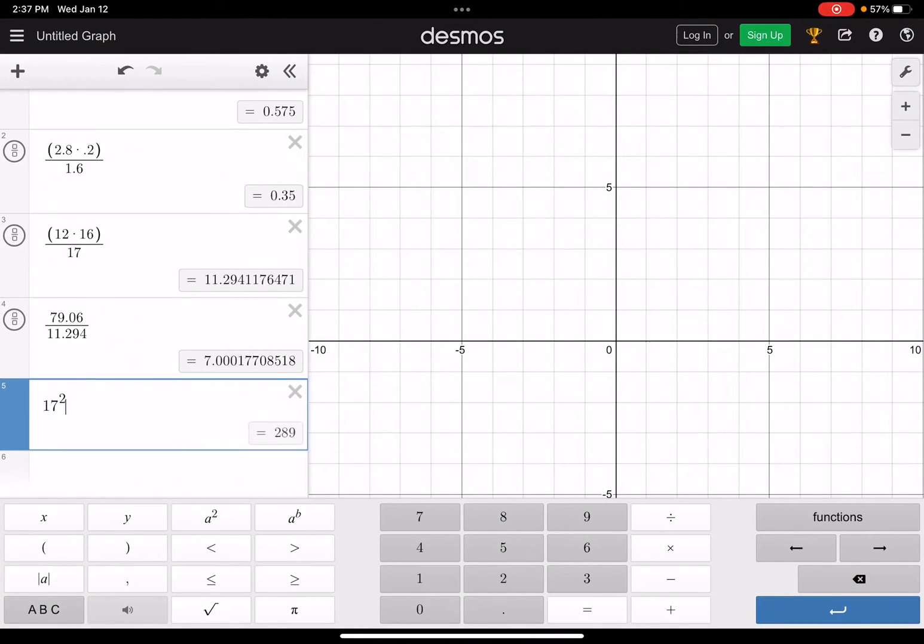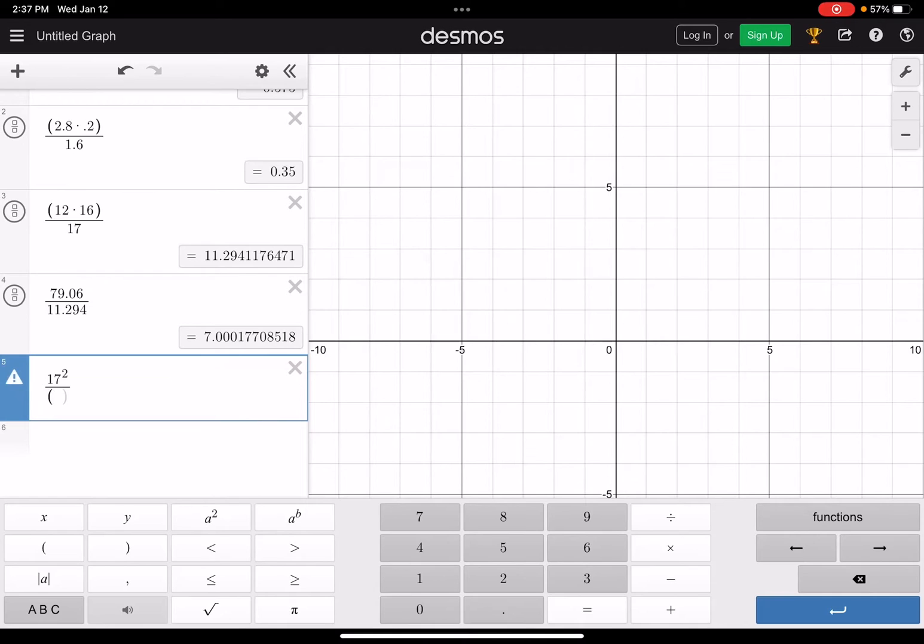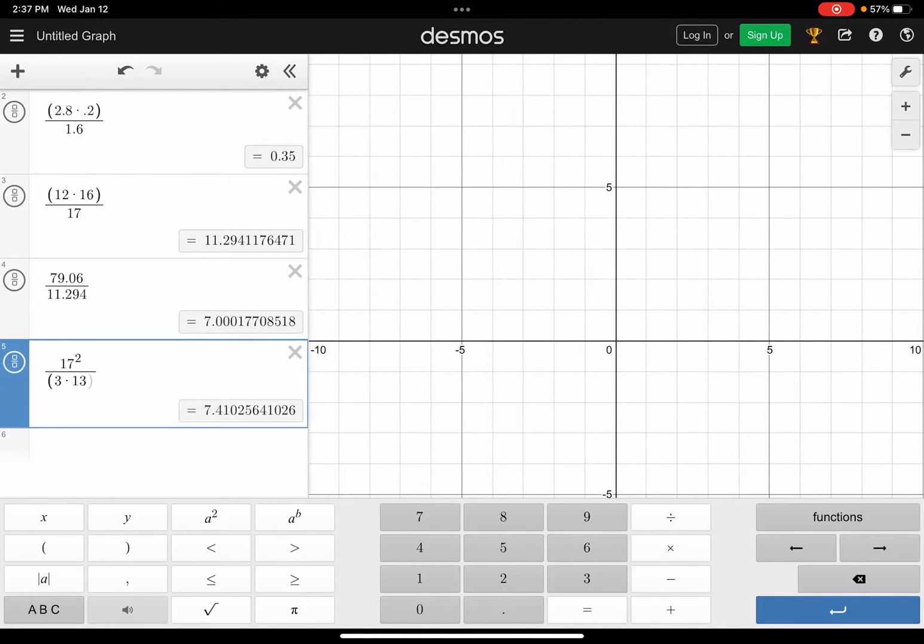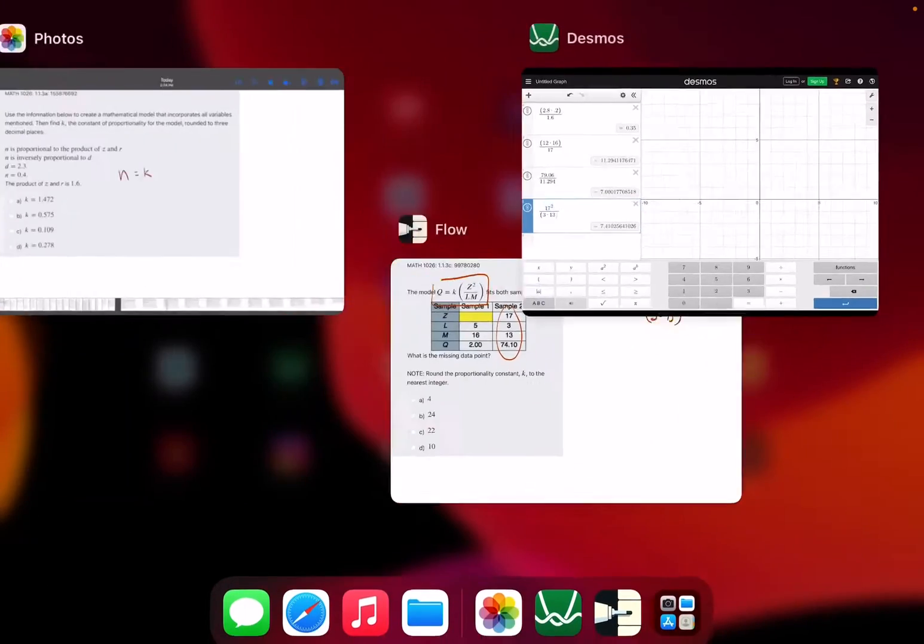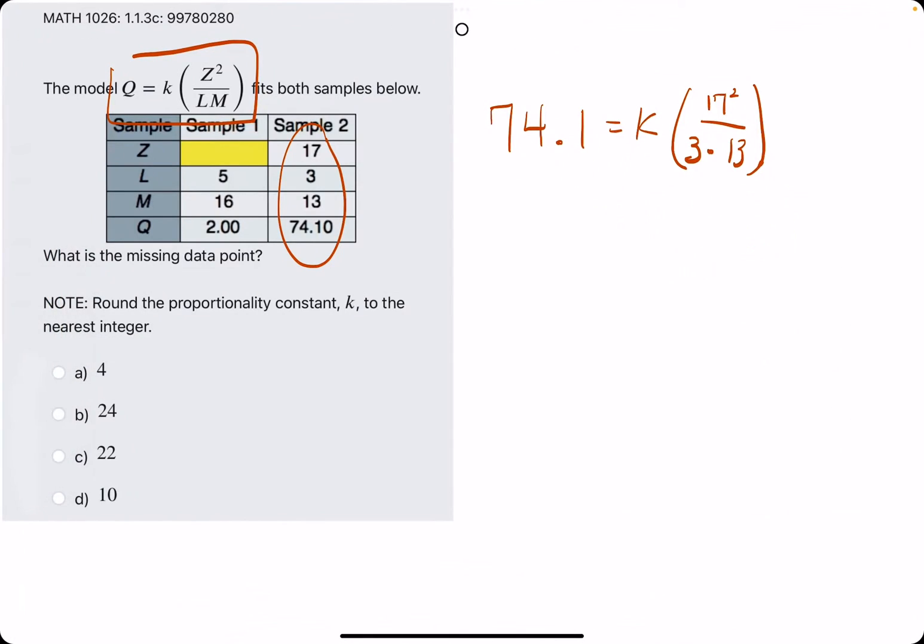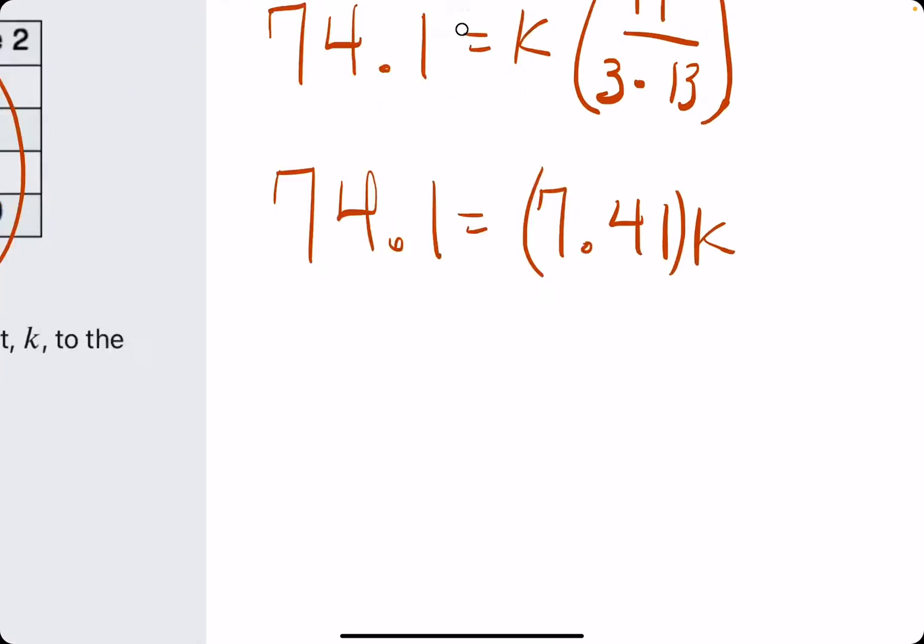17 squared over 3 times 13, and that gives us about 7.41. So we have 74.1 equals 7.41 times K. So to get K by itself here,